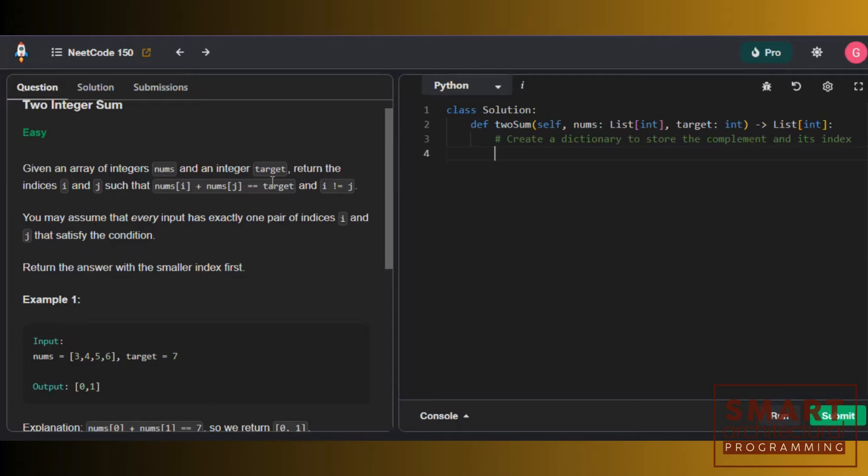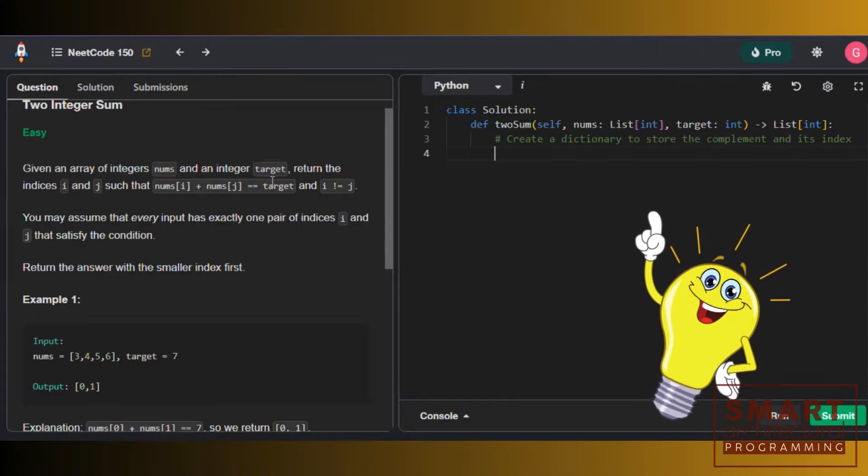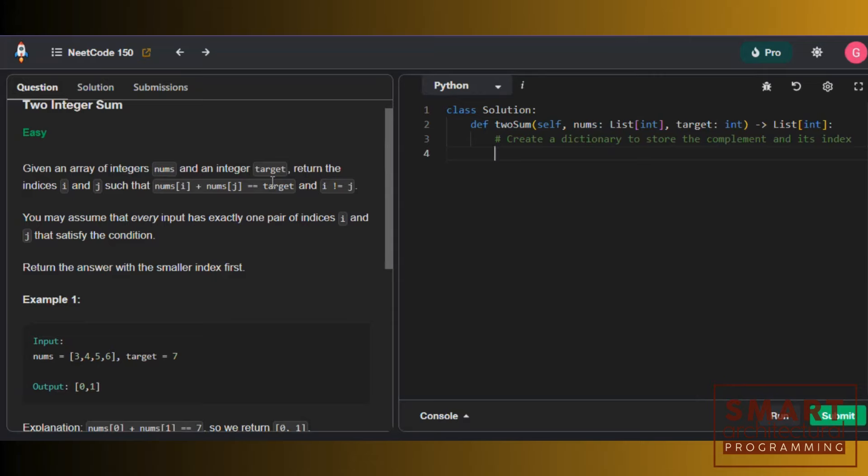We need to return the indices of two numbers, i and j, which are within the array of integers, nums, such that the sum of those two numbers equals the target integer. The indices i and j cannot be the same, which means we can't use the same number more than once.